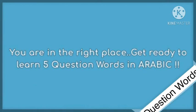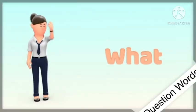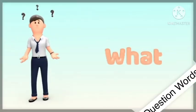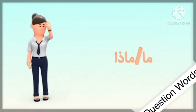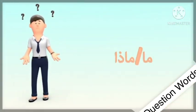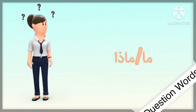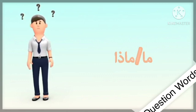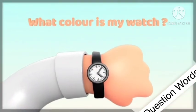Let's begin. The first question word is 'what.' In Arabic it is 'ma' or 'maza.' 'Ma' is used when there is no verb in the sentence, but 'maza' is used when there is a verb in the sentence. Let's see some examples with the word 'what.'